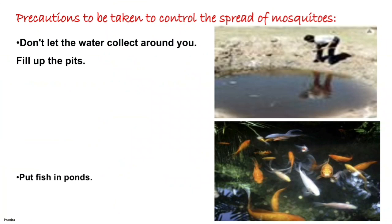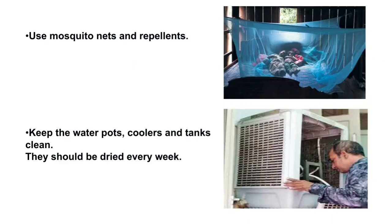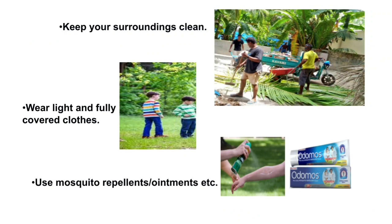Prevention is better than cure, so it is always better to take precautionary measures to control the spread of mosquitoes. Don't let water collect around you. Fill up pits. Put fish in ponds, as fish eat mosquito larvae. Spray oil on water-filled pits, ditches, and drains. Use mosquito nets and repellents. Keep water pots, coolers, and tanks clean — they should be dried every week. Keep your surroundings clean. Wear light and fully covered clothes. Use mosquito repellents or ointments.